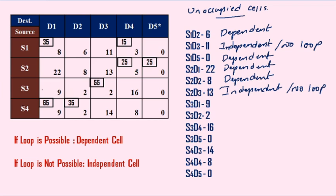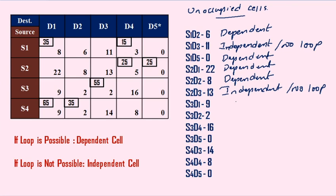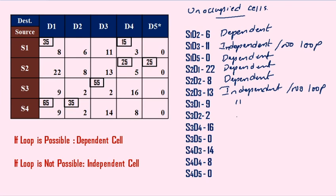S3, D1: we have three possible directions. Going in one direction — not possible to construct a loop. Going down — only one possible way, but no further cells in that line. Going right, then upward, right, down, and right again — also not possible. So S3, D1 is not having a loop — it is independent. Similarly, S3, D2 — trying down, left, upward, right, down, right again — not possible to construct a loop for S3, D2.